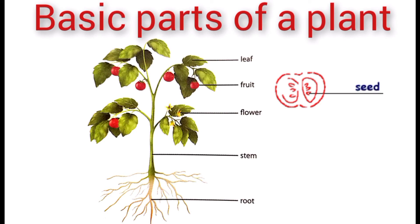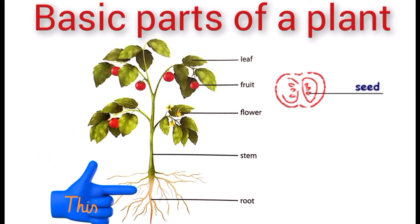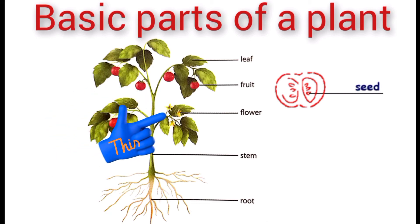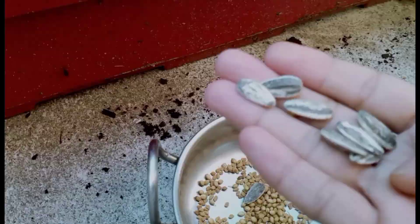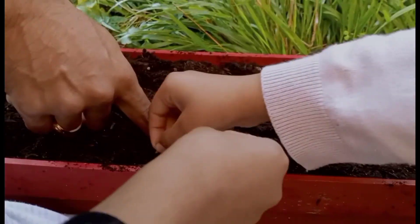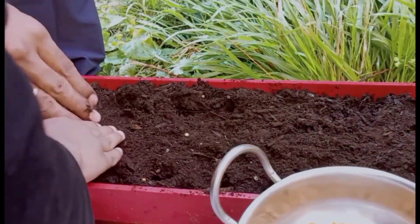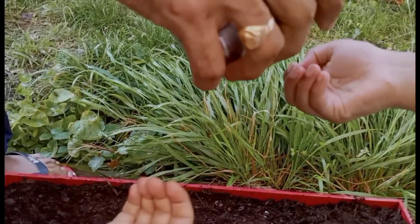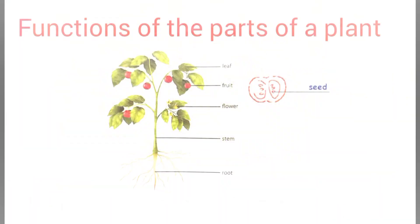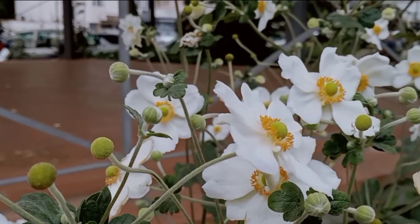To recap, the parts of a plant are: root, stem, flower, fruit, leaf, and seeds. Now try planting a seed in soil and water it daily, then observe whether a plant grows from the seed. We will meet in the next video to learn about the functions of each part of a plant.